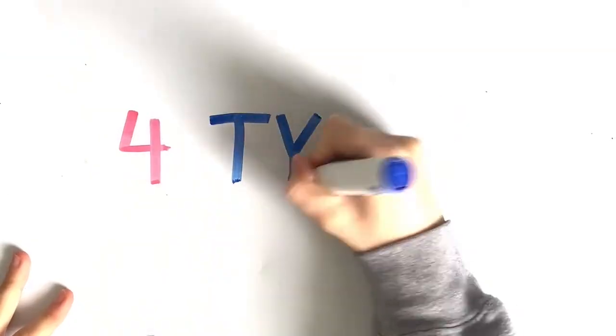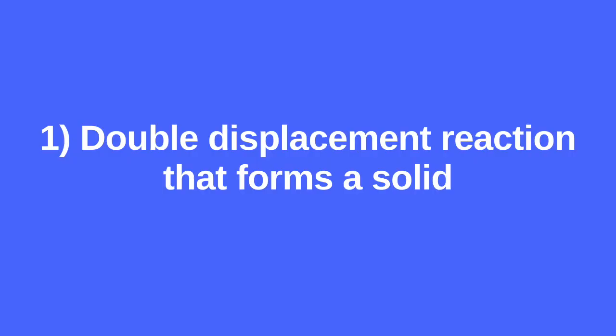There are four types of double displacement reactions. Firstly, we have a double displacement reaction that forms a solid. The solid in this reaction is usually a solid precipitate.